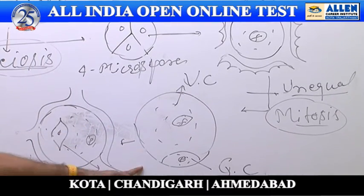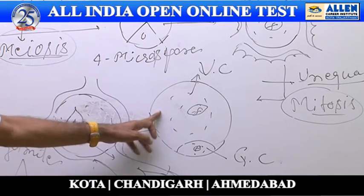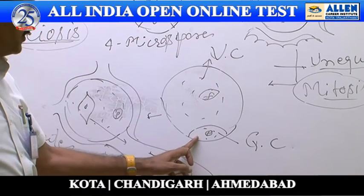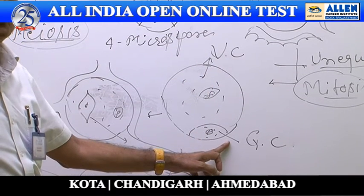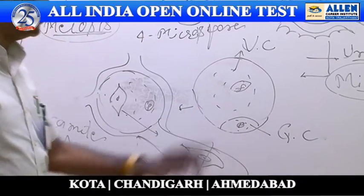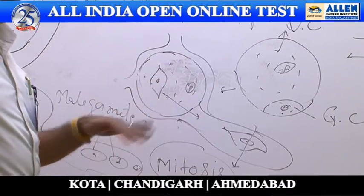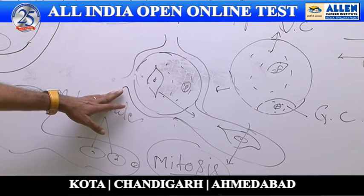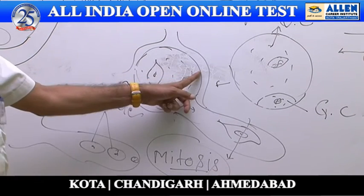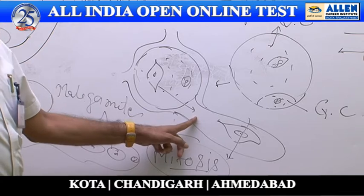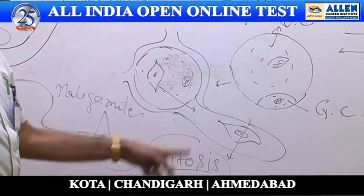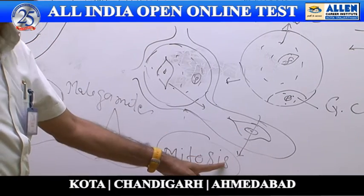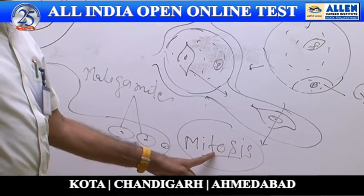During further development, the pollen grain divides by unequal mitotic division. As a result, two cells are formed: a large cell with a large nucleus called the vegetative cell, and a small cell with a small nucleus called the generative cell. After pollination, the pollen grain germinates on the stigma surface, forming a pollen tube, and the generative cell transfers into the pollen tube.